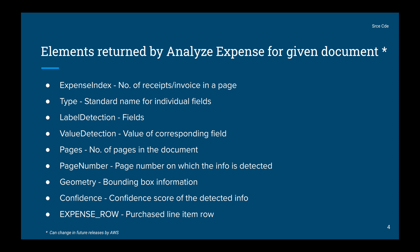The elements returned for a given document include: expense index, which depicts the number of receipts or invoices in a page; type, which is the standard name for individual fields; label detection and value detection, which form the key-value pair — the label being the fields we discussed and the corresponding value being the value detection; and pages, which depicts the number of pages in the document, or in the case of a multi-page document, the page number on which information is detected.